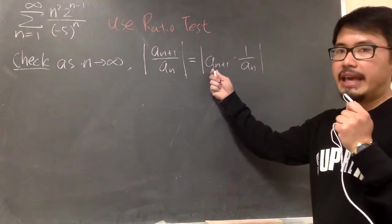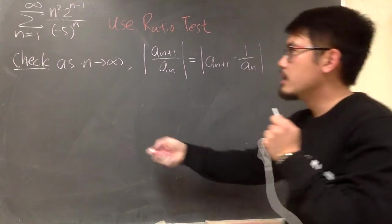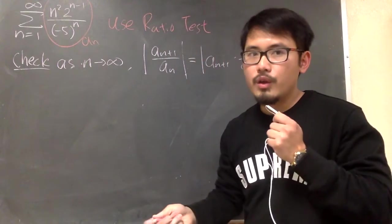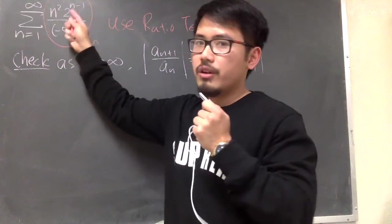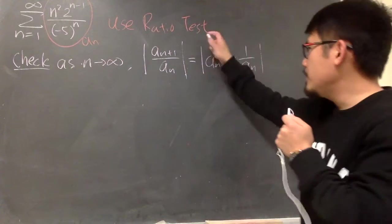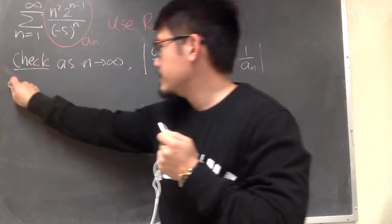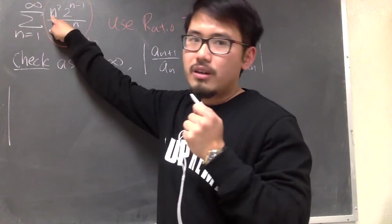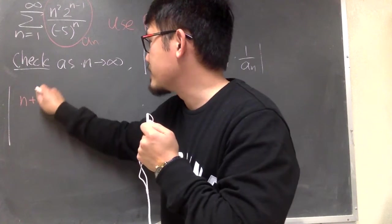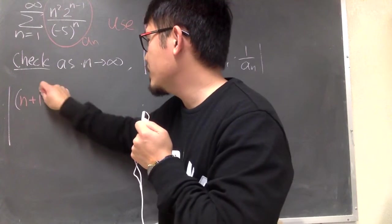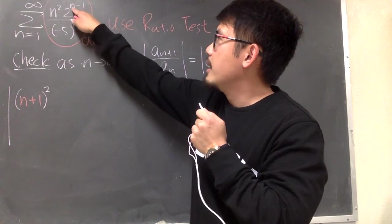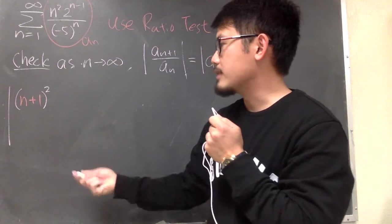Let me write down the a n plus 1 first. For a n plus 1, we are just going to look at all the n's right here, replace them with n plus 1. Let me open the absolute value first. And then we see right here, we have the n squared, and now it becomes n plus 1, and then I will square that. For this right here, we have 2 to the n minus 1. I will replace this n with n plus 1.